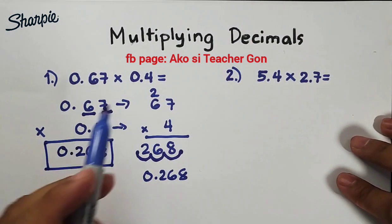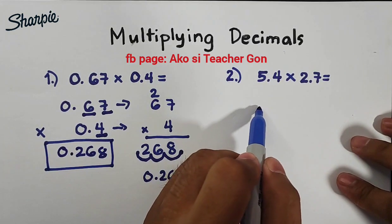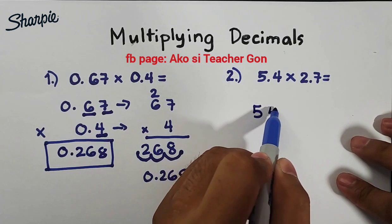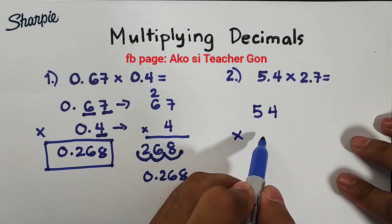Now let's move on with item number 2. So first we will convert this into a whole number. We have 54 times, we will also convert this into a whole number which is 27.